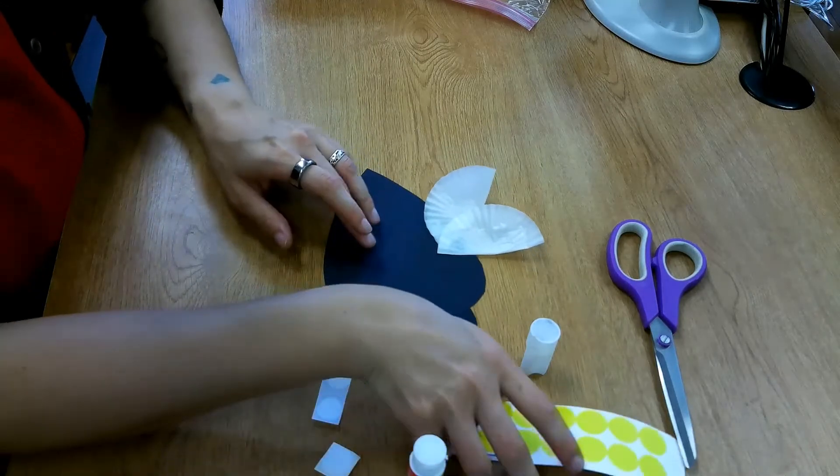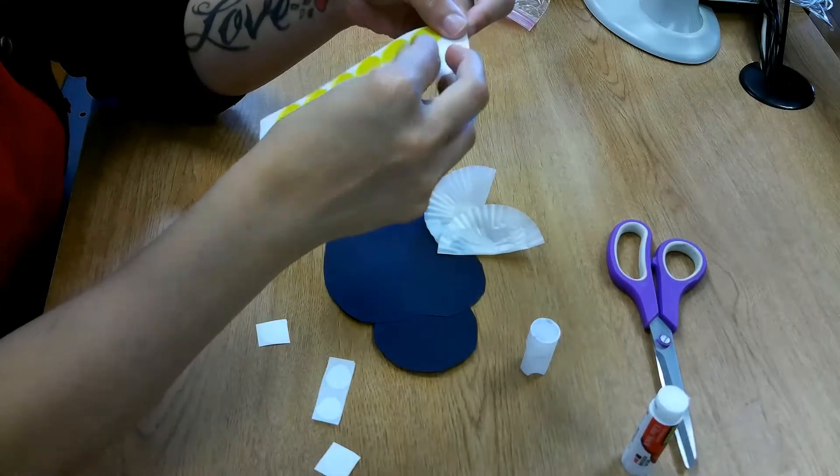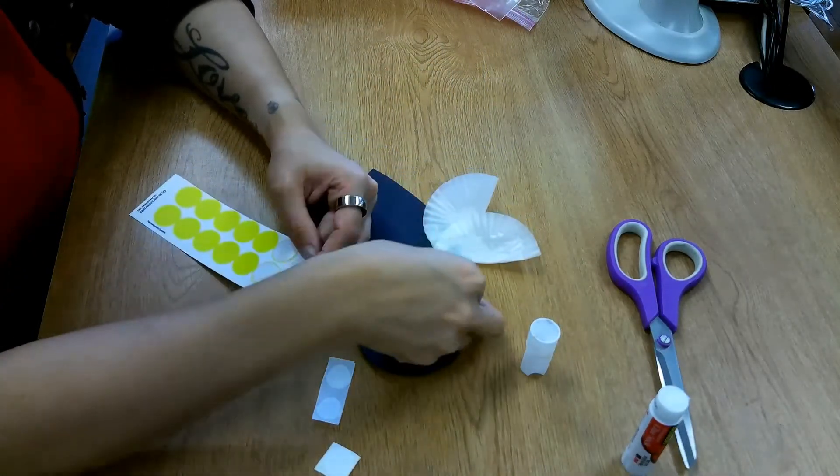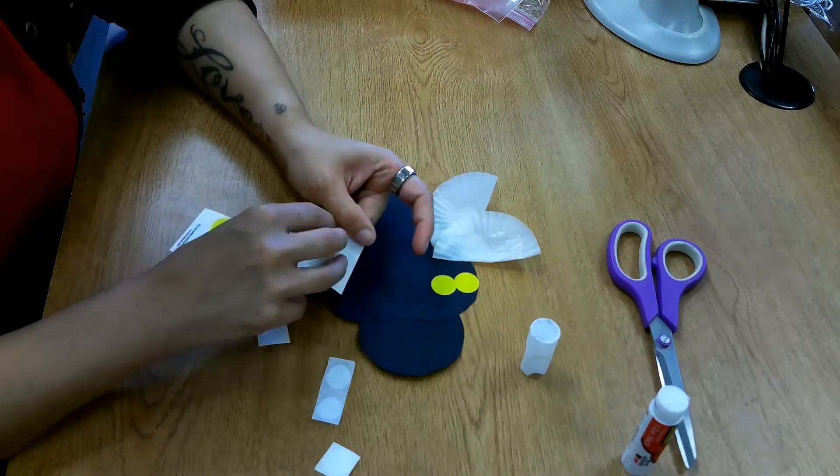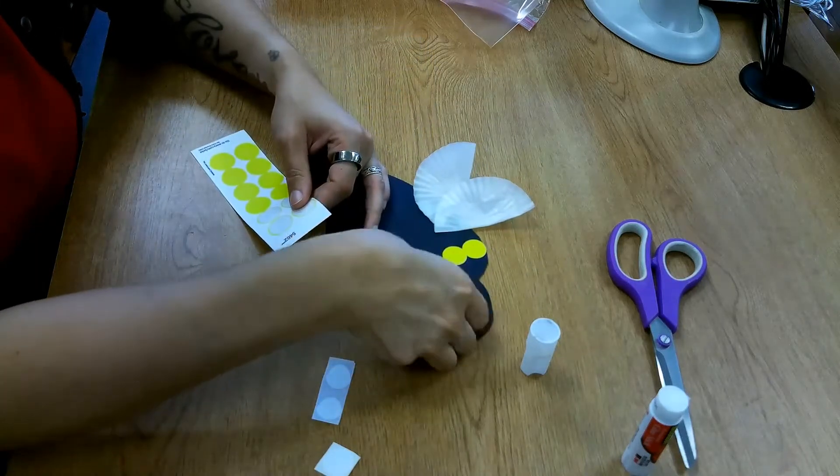Now we can use our yellow stickers to make bumblebee stripes. So we're just going to line up our yellow stickers all the way across the bee's body.